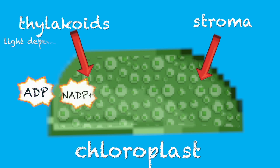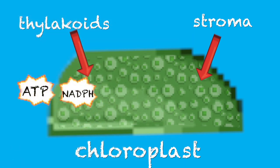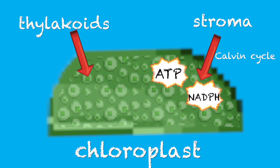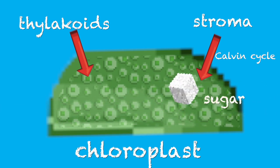Thylakoid is where the light-dependent reactions occur. This is where light and water are absorbed to make ATP and NADPH. After this process, the end products go to the stroma. This is where the Calvin Cycle occurs. It uses these products along with carbon dioxide to make sugar. Let's see how this process unfolds step by step.